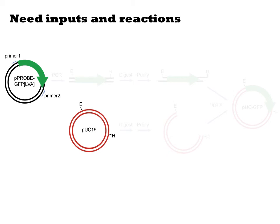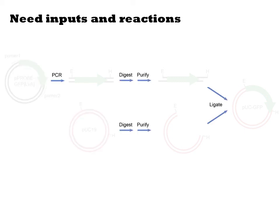The list of input sequences and the reactions. This list of sequences for our experiment would include P-probed GFP LVA, PUC-19, Primer-1, and Primer-2. And there are six reactions, one PCR, two digest, two purifies, and one ligate.